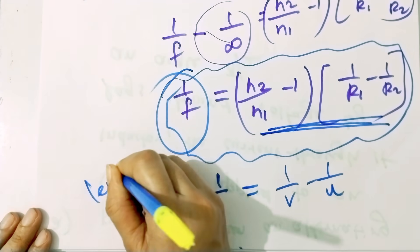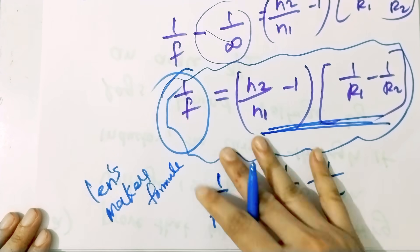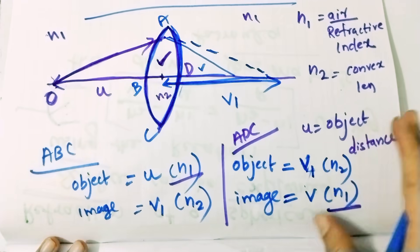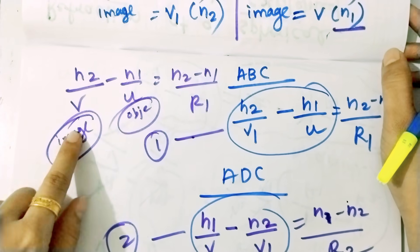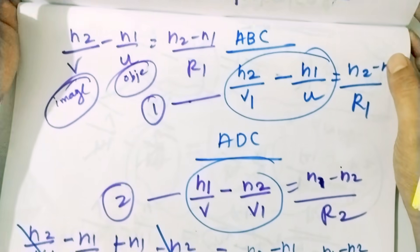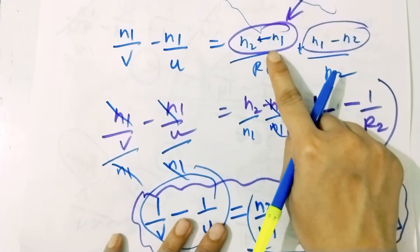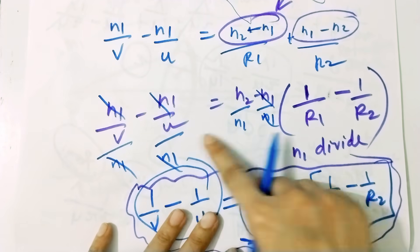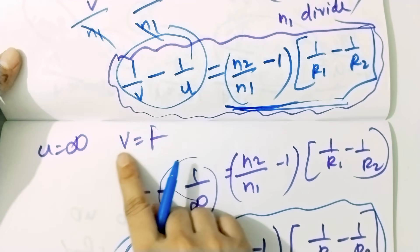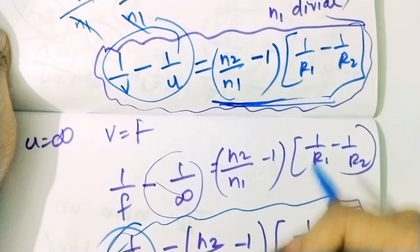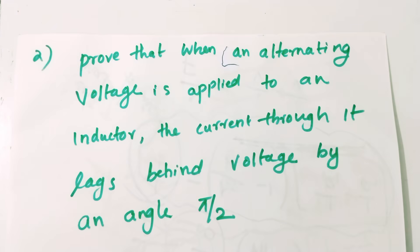This is the Lens Makers Formula. This is the Lens Makers Formula derivation complete. Now the second derivation is the alternating current chapter — specifically about an inductor in an AC circuit.